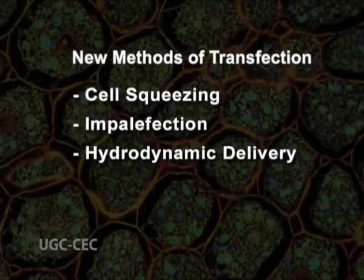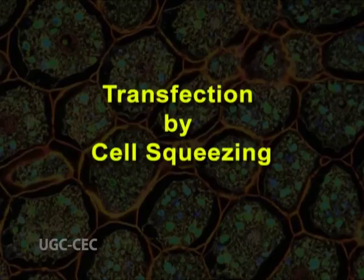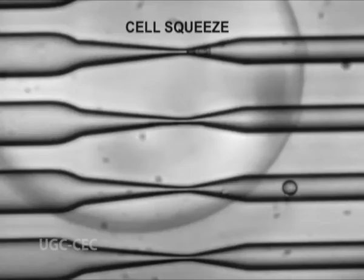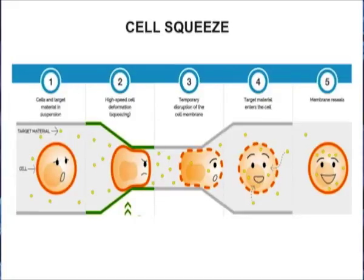Some new methods have been developed for gene transfer into cells, such as cell squeezing, impalement infection, and hydrodynamic delivery. Cell squeezing, proposed by Armand Sherry in 2012, is a method of delivering molecules into cells by gentle squeezing of the cell membrane. The cells get deformed when passed through a narrow channel repeatedly; the target cells are passed back and forth, leading to the formation of transient holes in the cell membrane due to shear stress, and gene transfer takes place through these pores.